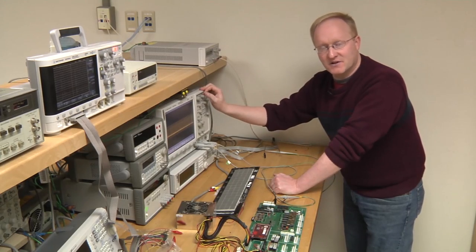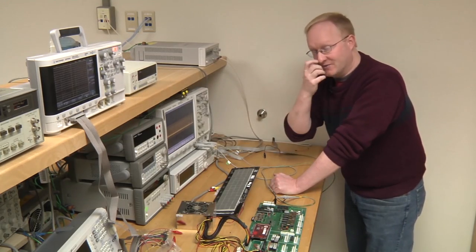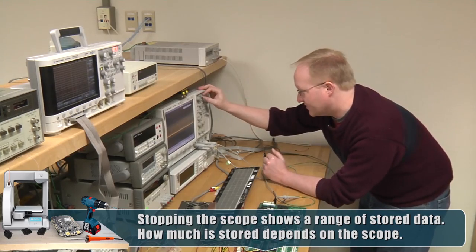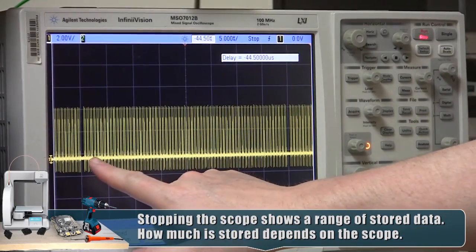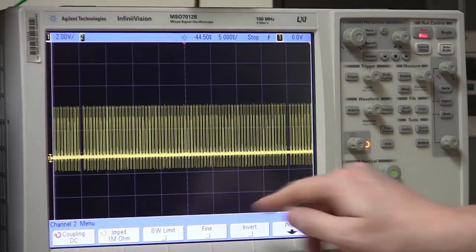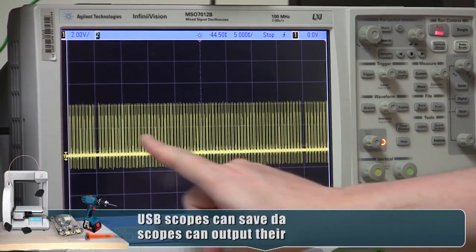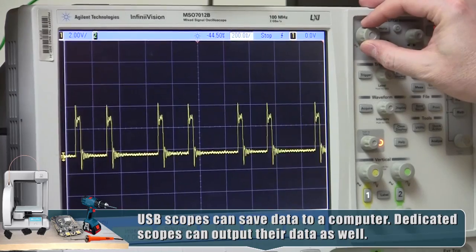The amount of data you can store depends on your scope. Usually, the nicer ones will have more data, and the cheaper ones will be less. All right, so right here, we can clearly see here is a row advance, a row advance. And if we were to count these, I bet we'd have 128 pulses. I'm not going to bother counting because I'm pretty sure that's what it's going to be.